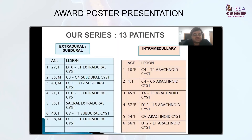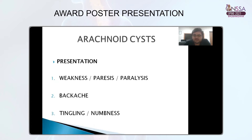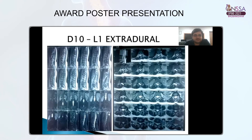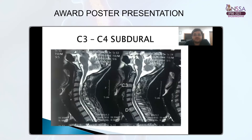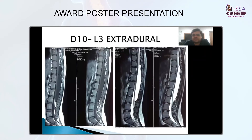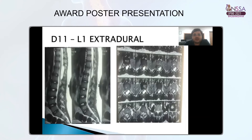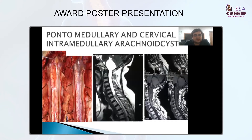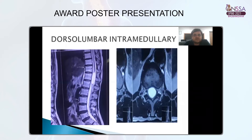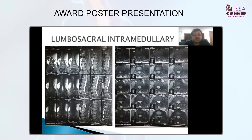In our series of 13 patients, 7 were extradural or subdural and 6 patients were intramedullary. Presentation varied from weakness, paresis, or paralysis along with back pain and tingling numbness. Cases included a D10-L1 extradural cyst, a C3-C4 subdural cyst, a D10-L3 extradural cyst, a sacral extradural cyst, a D11-L1 extradural cyst, a pontomedullary and cervical intramedullary arachnoid cyst — this patient was operated twice and referred to us for further management — a dorsal lumbar intramedullary cyst, and a lumbosacral intramedullary cyst.